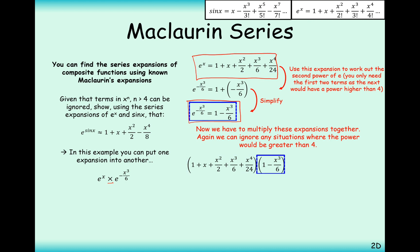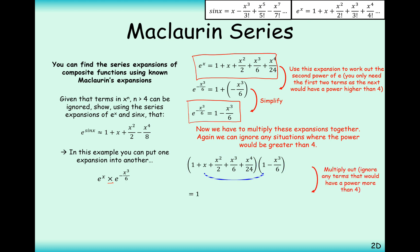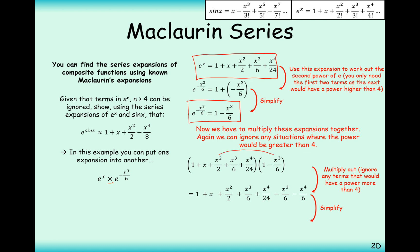Let's now expand the brackets. We expand term by term — noting that we don't need to expand x² by x³ because that gives an x⁵ term, which we ignore since we're discarding anything greater than power 4. Simplifying what we've got: we have 1, x, x²/2. Two terms cancel each other out, and the remaining terms add up to -x⁴/8.